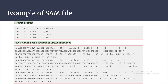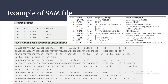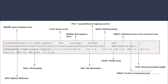Coming to the alignment section: each line in this section has information for each read, and each line consists of 11 or more tab-separated fields — query name, flag, reference name, position, mapping quality, and more. Let's briefly look at each field with an example. There is one read entry having all 11 columns. The first column is the QNAME, that is the query template name; it corresponds to the read name from the FASTQ file.